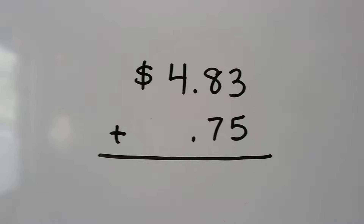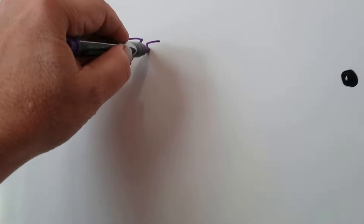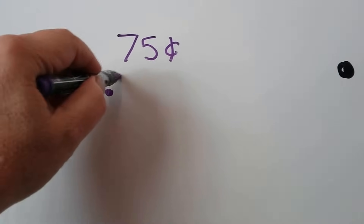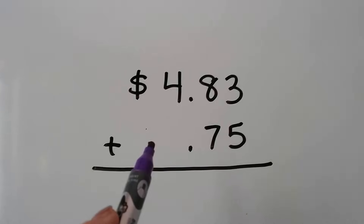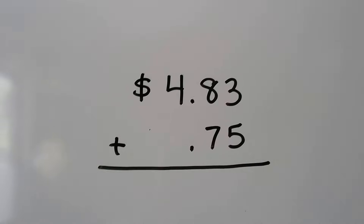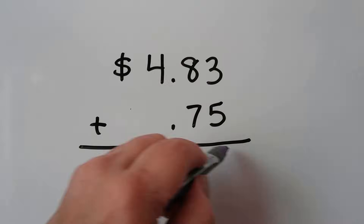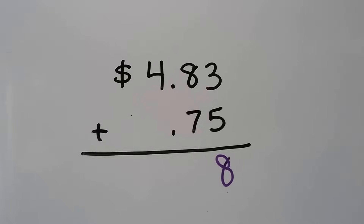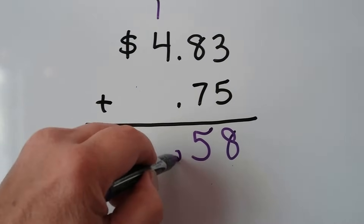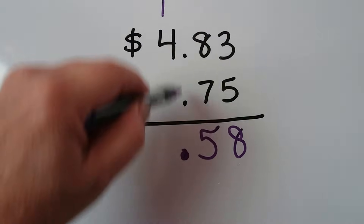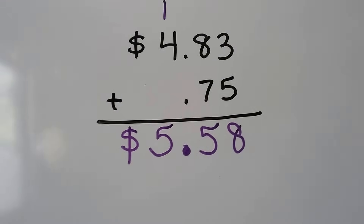Let's try another addition one. We're going to add 4 dollars and 83 cents with 75 cents. You can write 75 cents with a cent sign or we can put .75 to mean 75 cents. Because everything on this side of the decimal point is cents and everything on the other side is dollars. So when you see this decimal point and then two numbers, you know it can mean money. 5 plus 3 is 8. 8 plus 7 is 15. We regroup the 1 and put the 5 down. We put our decimal point in a nice pretty column. Then we add the 4 and the 1 and get a 5. We remember our dollar sign and we have 5 dollars and 58 cents.